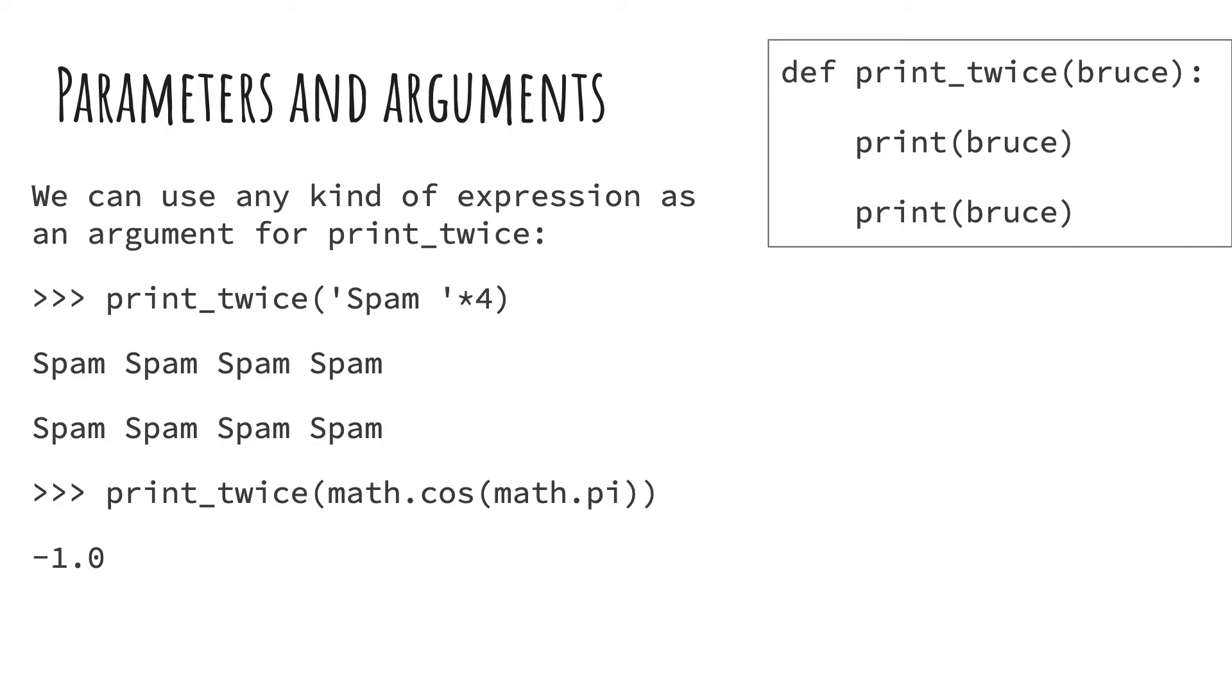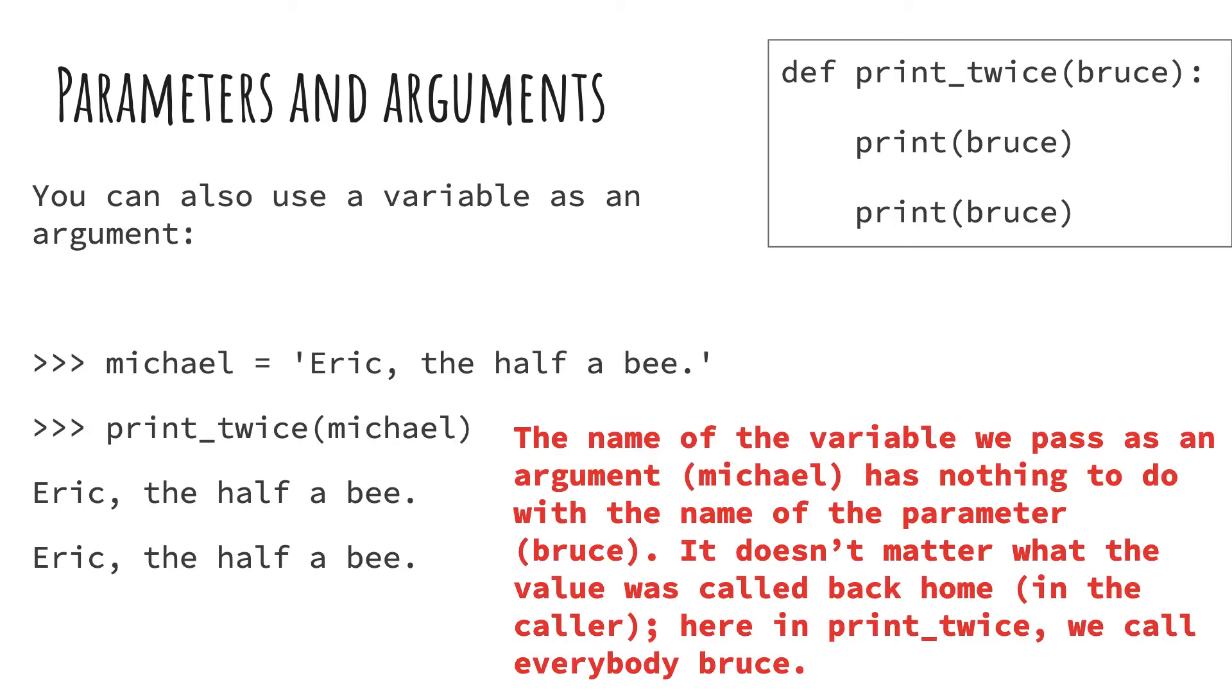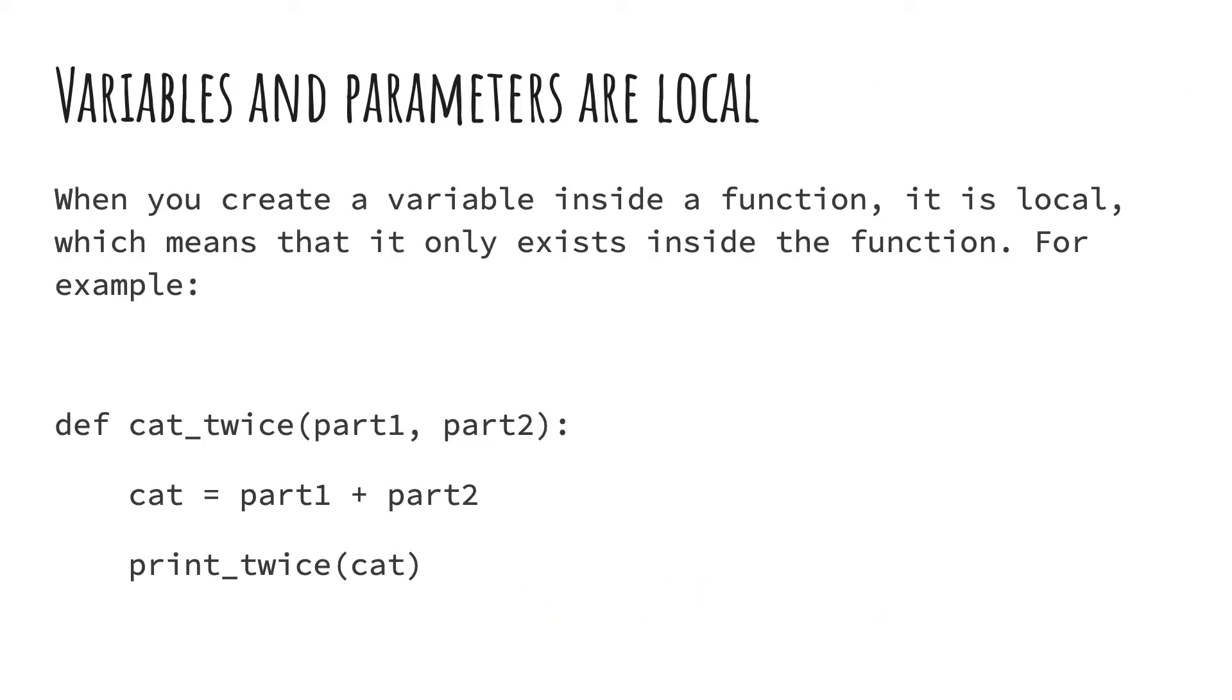And then at the bottom part, you see examples of functions inside of functions. Functions can be arguments to things. And then what happens here? I think I'm trying to emphasize the point of the parameter and argument difference. So notice you have a variable, Michael. We print the variable Michael twice. Eric, the half B. So you see that sentence twice.